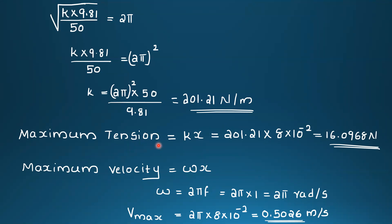For maximum tension in the spring, the force equals k times x. That is: 201.21 times 8 × 10⁻² equals 16.0968 Newton. This is the maximum tension induced in the spring.